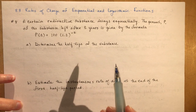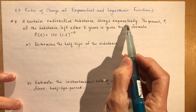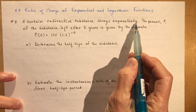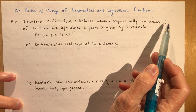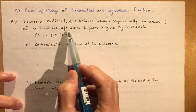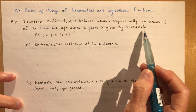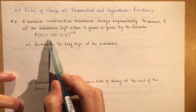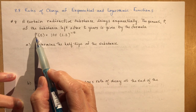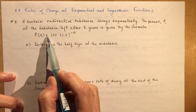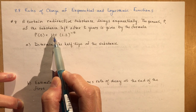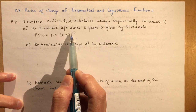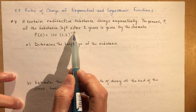So a certain radioactive substance decays exponentially — so it's coming down. The percent P of the substance left after T years is given by this formula. The percentage at time T is 100% times 1.2 to the negative T. So it's decreasing.